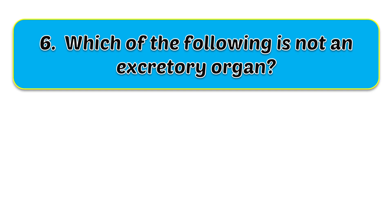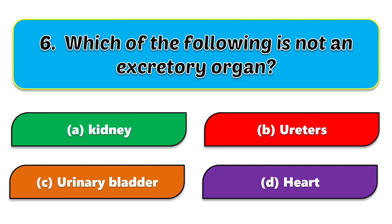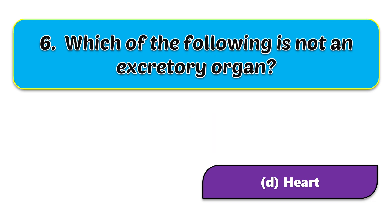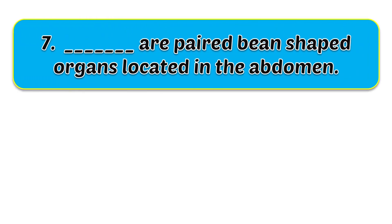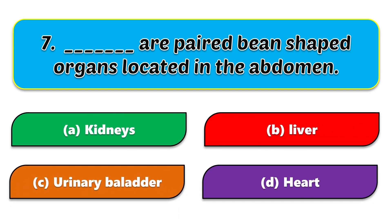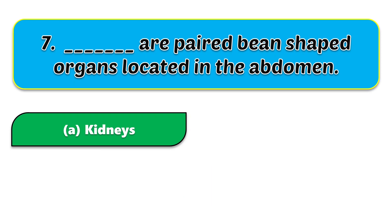The answer to the fifth question is urethra. Sixth question: which of the following is not an excretory organ? The options are kidney, urethra, urinary bladder, and heart. The correct answer is heart. Seventh question: blank are paired bean-shaped organs located in the abdomen — options are kidneys, liver, urinary bladder, and heart. The answer is kidneys.